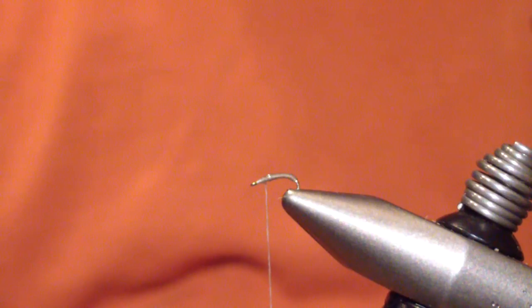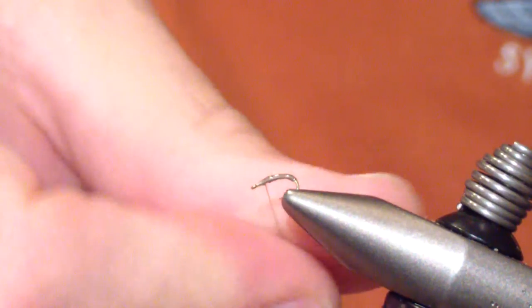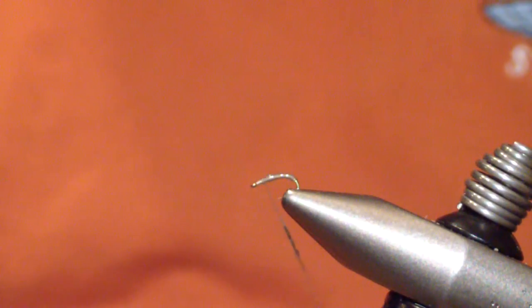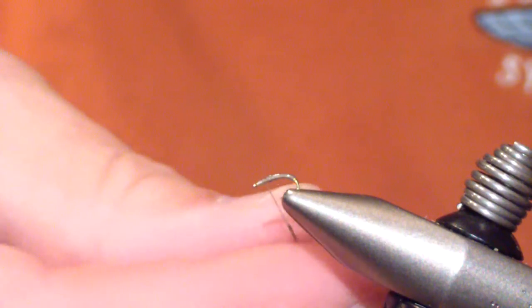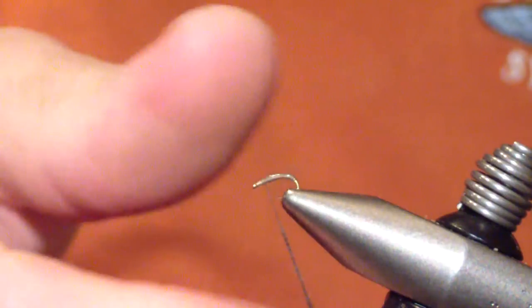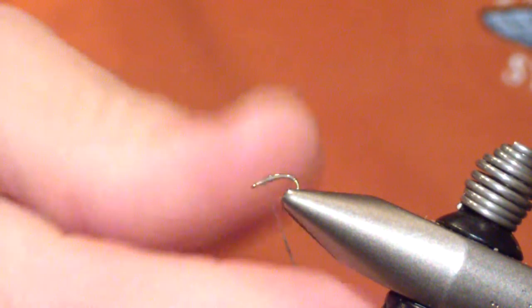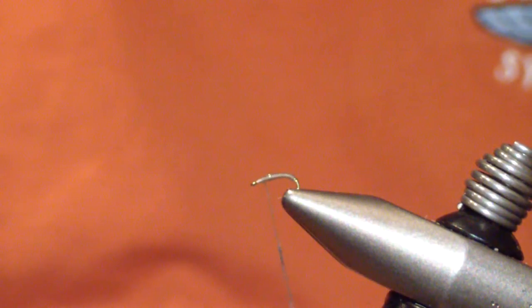And the next material that I apply is Dark Dun Orvis Spectra Blend. It's a very small, slight thorax. What I do is I start the dubbing. But we don't dub the thorax immediately.